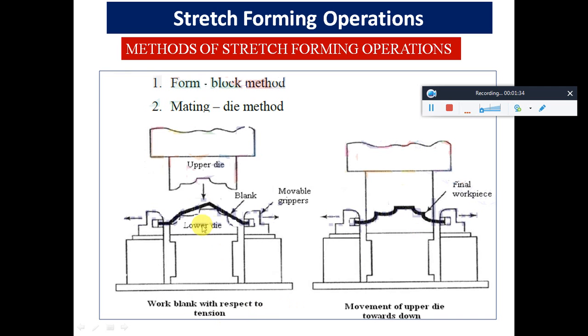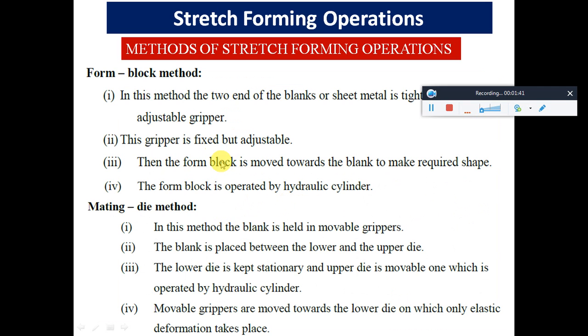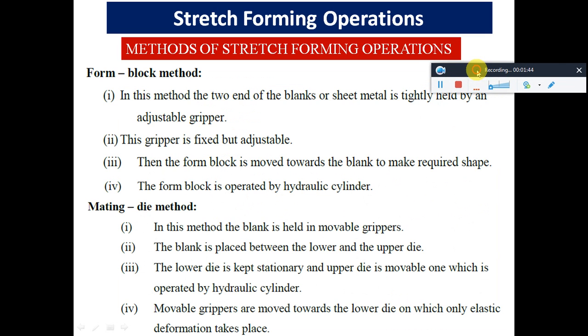The work blank experiences tension with the movement of the upper die downwards, creating the desired shape. In this method, the two ends of the blank or sheet metal are tightly held by an adjustable gripper. The gripper is fixed but adjustable.